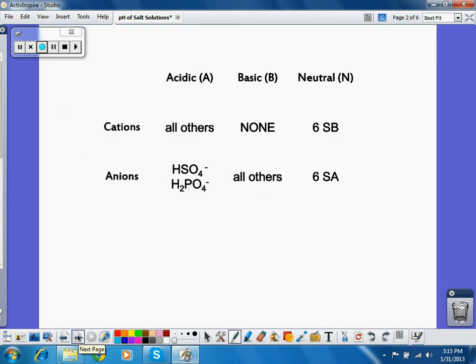So this is a chart we looked at way back at the beginning of the year. So when we're looking at whether or not a solution is acidic, basic, or neutral, we look at the ions that are present in solution. So there are only a few ions that are neutral. And they come from the strong bases and the strong acids.